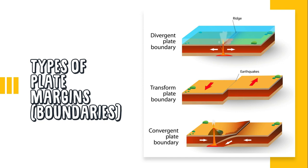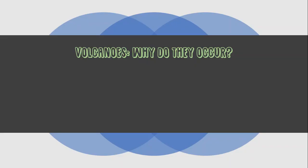There are three types of plate margins or boundaries we'll look at today: the first is a divergent plate boundary, the second is a transform plate boundary, and the third is a convergent plate boundary. We'll also see how each of these influences either a volcano or an earthquake. Active volcanoes are volcanoes known to have erupted, and most occur in areas close to plate margins or boundaries.